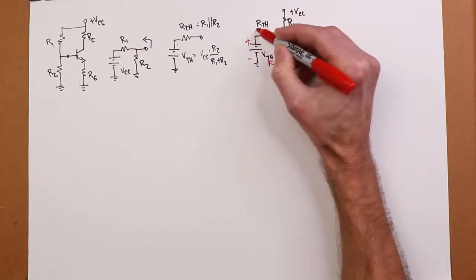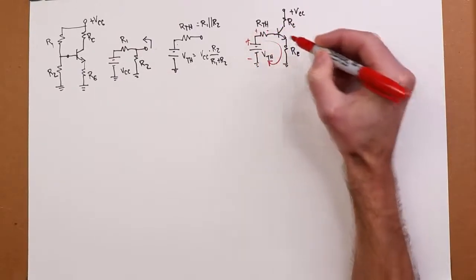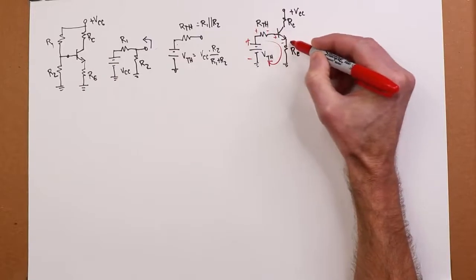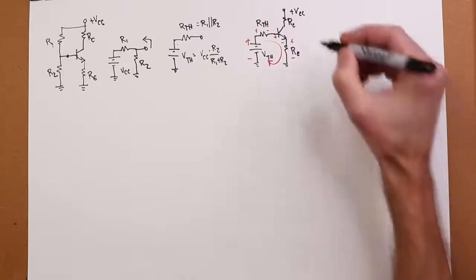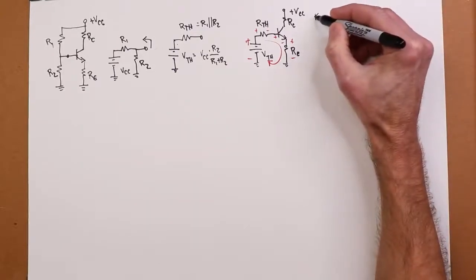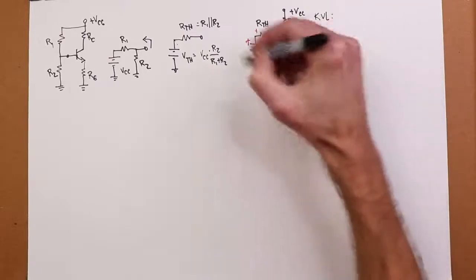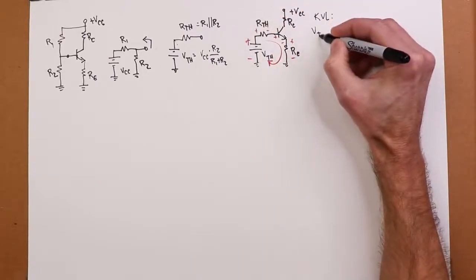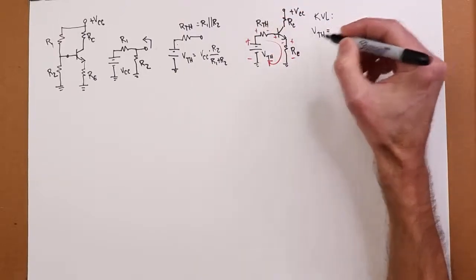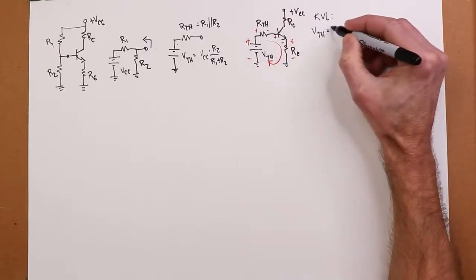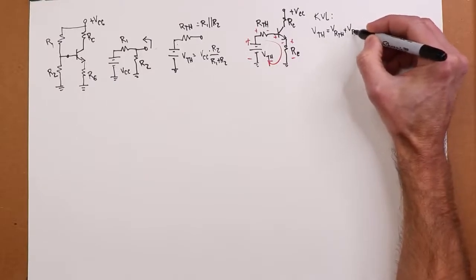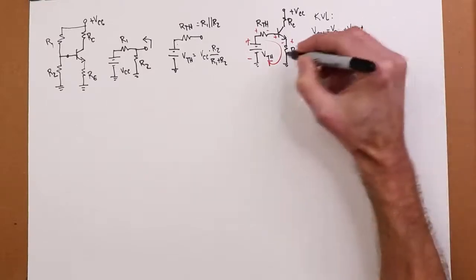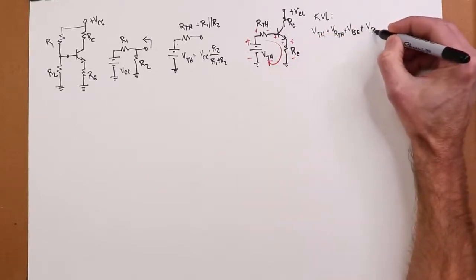There's our rise, we have a drop on the thevenin resistance, we have a drop on the base emitter, and a drop on RE. So, using KVL, we would say that the rise, V-thevenin, would have to equal the drop on the thevenin resistance V of RTH, plus the VBE, plus the drop on the emitter resistor VRE.